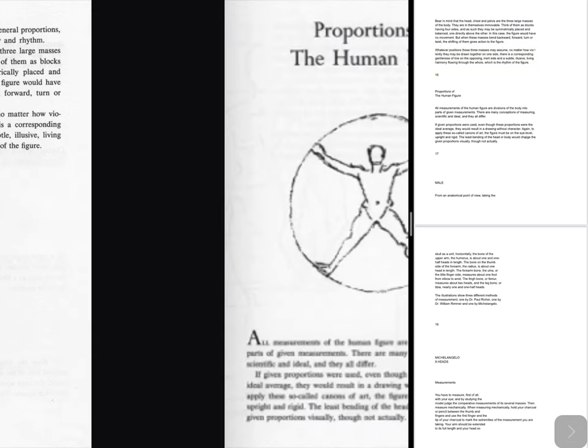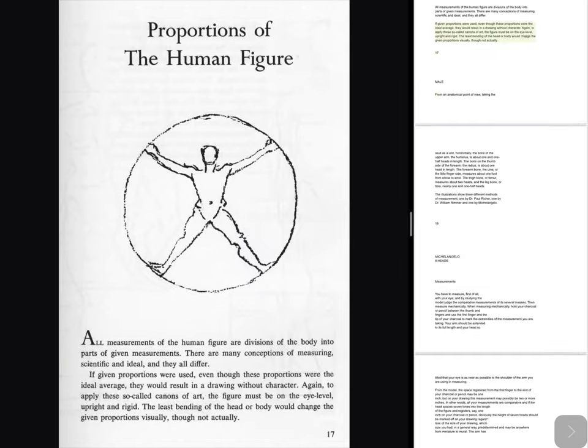Proportions of the human figure: All measurements of the human figure are divisions of the body into parts of given measurements. There are many conceptions of measuring, scientific and ideal, and they all differ. If given proportions were used, even though these proportions were the ideal average, they would result in a drawing without character. Again, to apply these so-called canons of art, the figure must be on the eye level, upright and rigid. The least bending of the head or body alters the given proportions visually, though not actually.